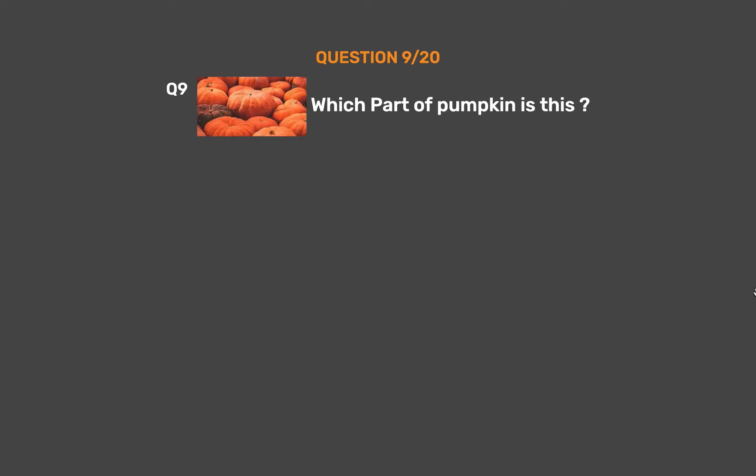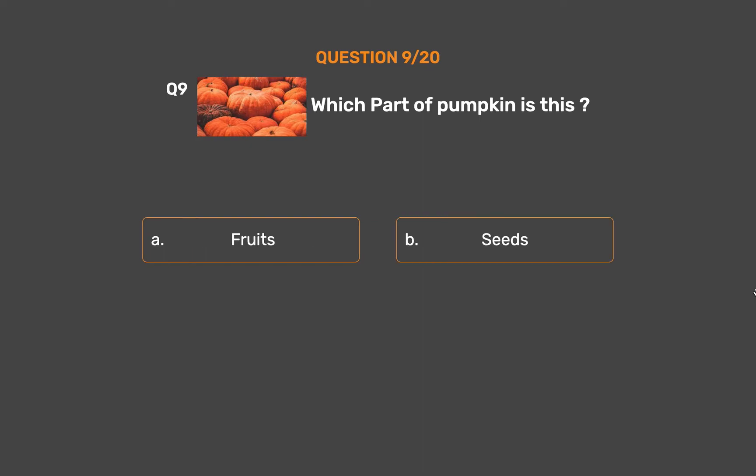Question number 9. Which part of pumpkin is this? Option A, Fruits. Option B, Seeds. Option C, Flowers. Option D, Stem.